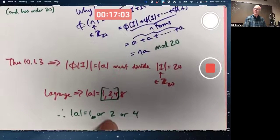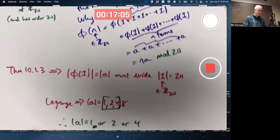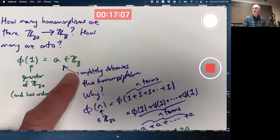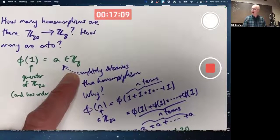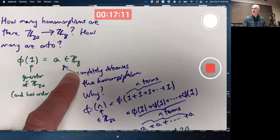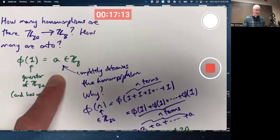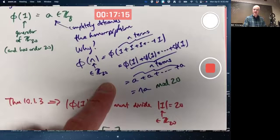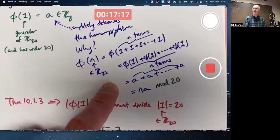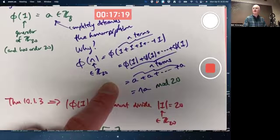If the order of A is two, there's only one element of Z8 that has order two, the number four. One will get mapped to four and that'll determine everything else. The two would get mapped, for example, to zero. Two times four is eight is zero, mod eight.